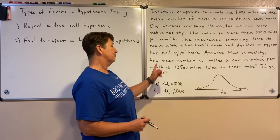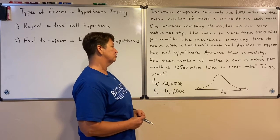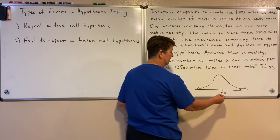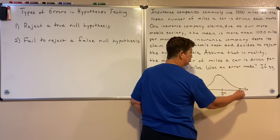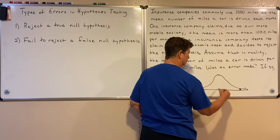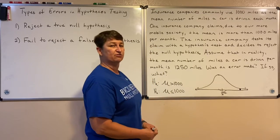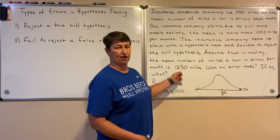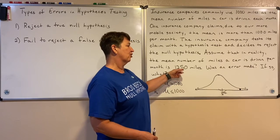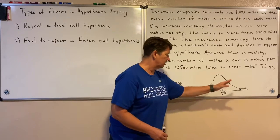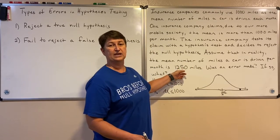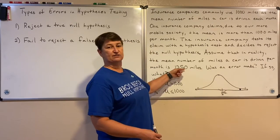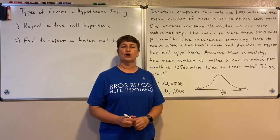Assuming the mean is actually 1,250 miles, we're rejecting the null because the test statistic is way out there — and it turns out the mean really is more than 1,000. So there was no error made. They rejected the null, and sure enough the mean is larger. They had support for their claim, and it turns out to be a true claim. No error was made in this case.